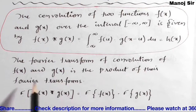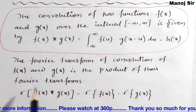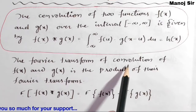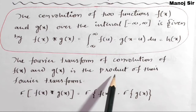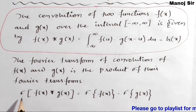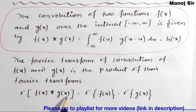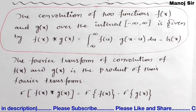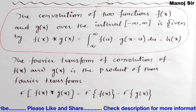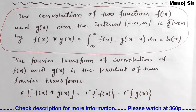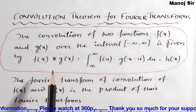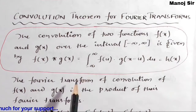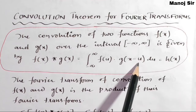The Fourier transform of the convolution of f(x) and g(x) is the product of their Fourier transforms. That is, Fourier transform of convolution of f(x) and g(x) equals Fourier transform of f(x) into Fourier transform of g(x). We are going to prove this. The key formula we need is: convolution of f(x) and g(x) equals integration from minus infinity to plus infinity of f(u) into g(x minus u) du.